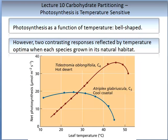The relationship of photosynthesis as a function of temperature is described as a bell shape, and this is shown for C3 and C4 plants in the figure below. However, two contrasting responses are reflected by the temperature optimum when each species is grown in its own habitat. For example, the hot desert C4 plant is more optimal at a higher temperature — just over 40 degrees — than the cool coastal C3 plant.